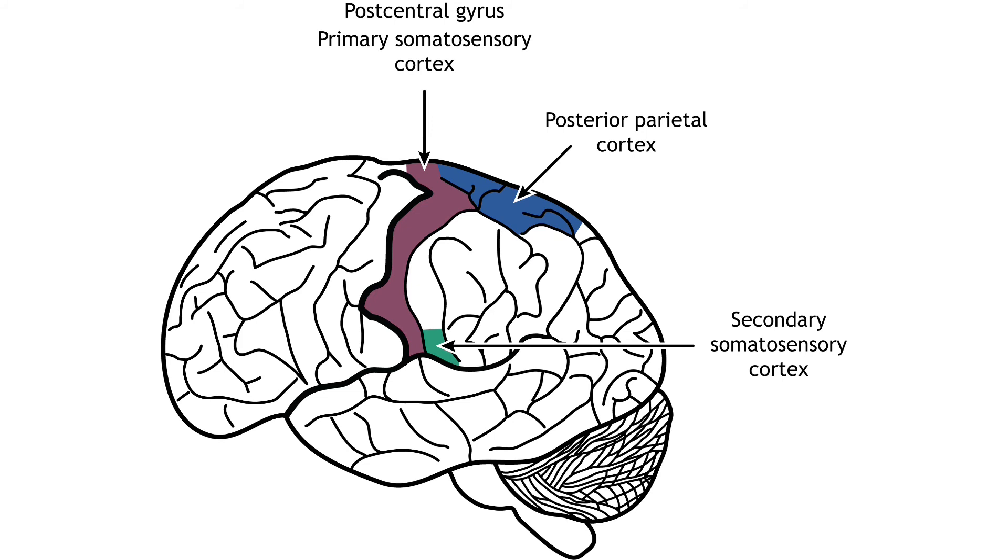The secondary somatosensory cortex sends projections to the posterior parietal cortex, the premotor cortex, the amygdala, and the hippocampus. The posterior parietal cortex recognizes touch characteristics, like orientation and movement. It is also important for combining the touch and motor components of actions, like grasping. The posterior parietal cortex has important outputs to the frontal motor cortex.